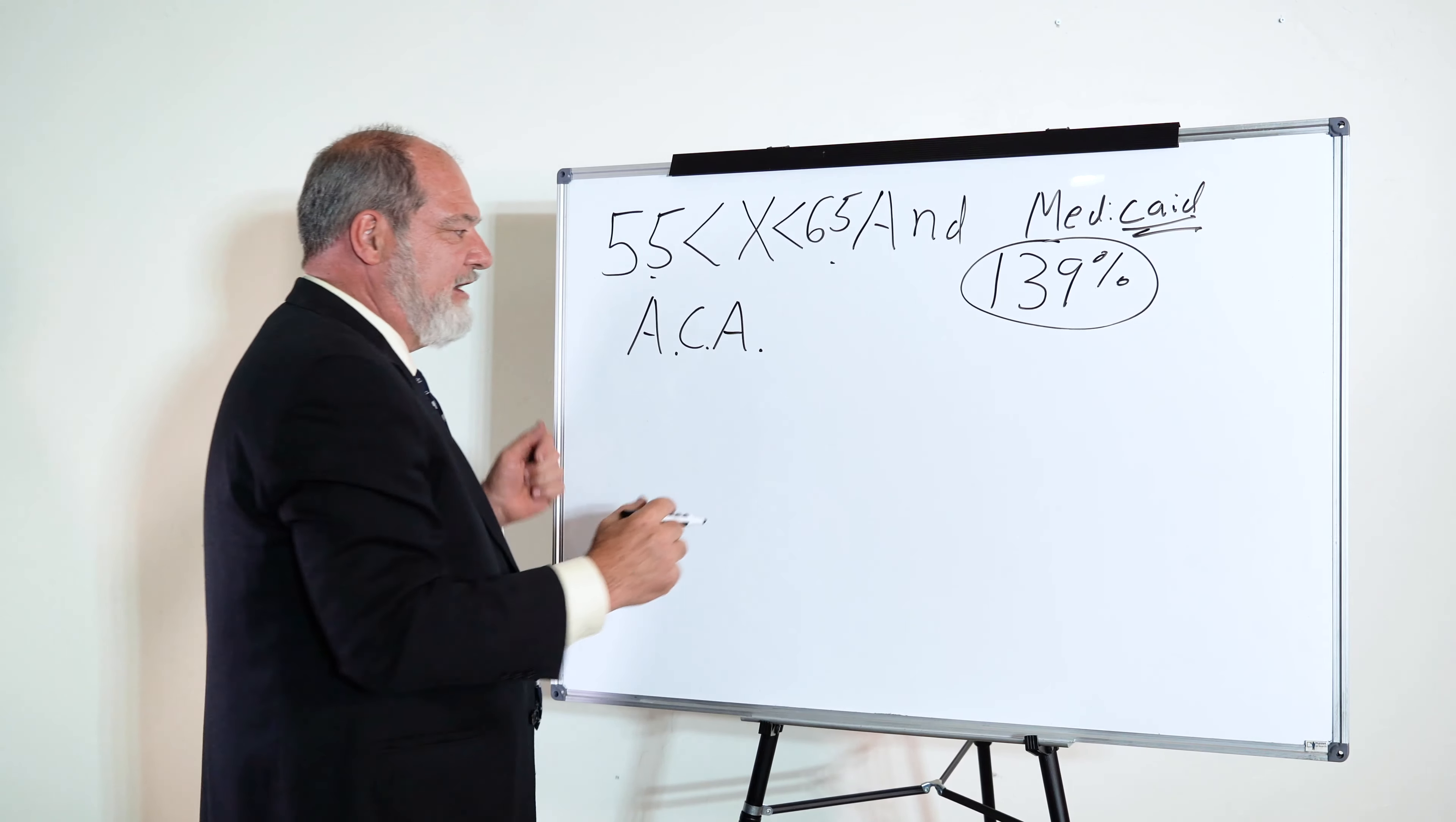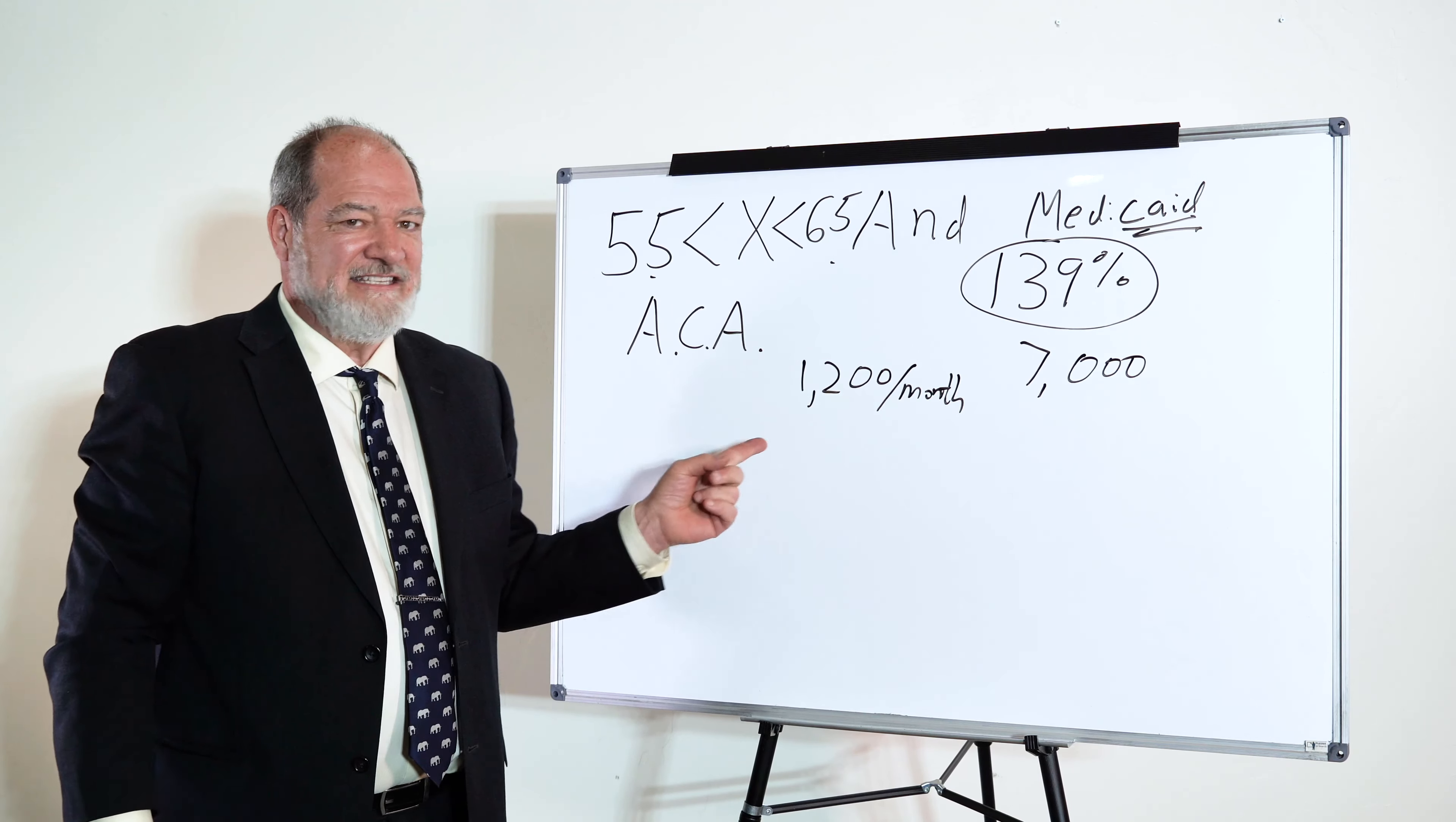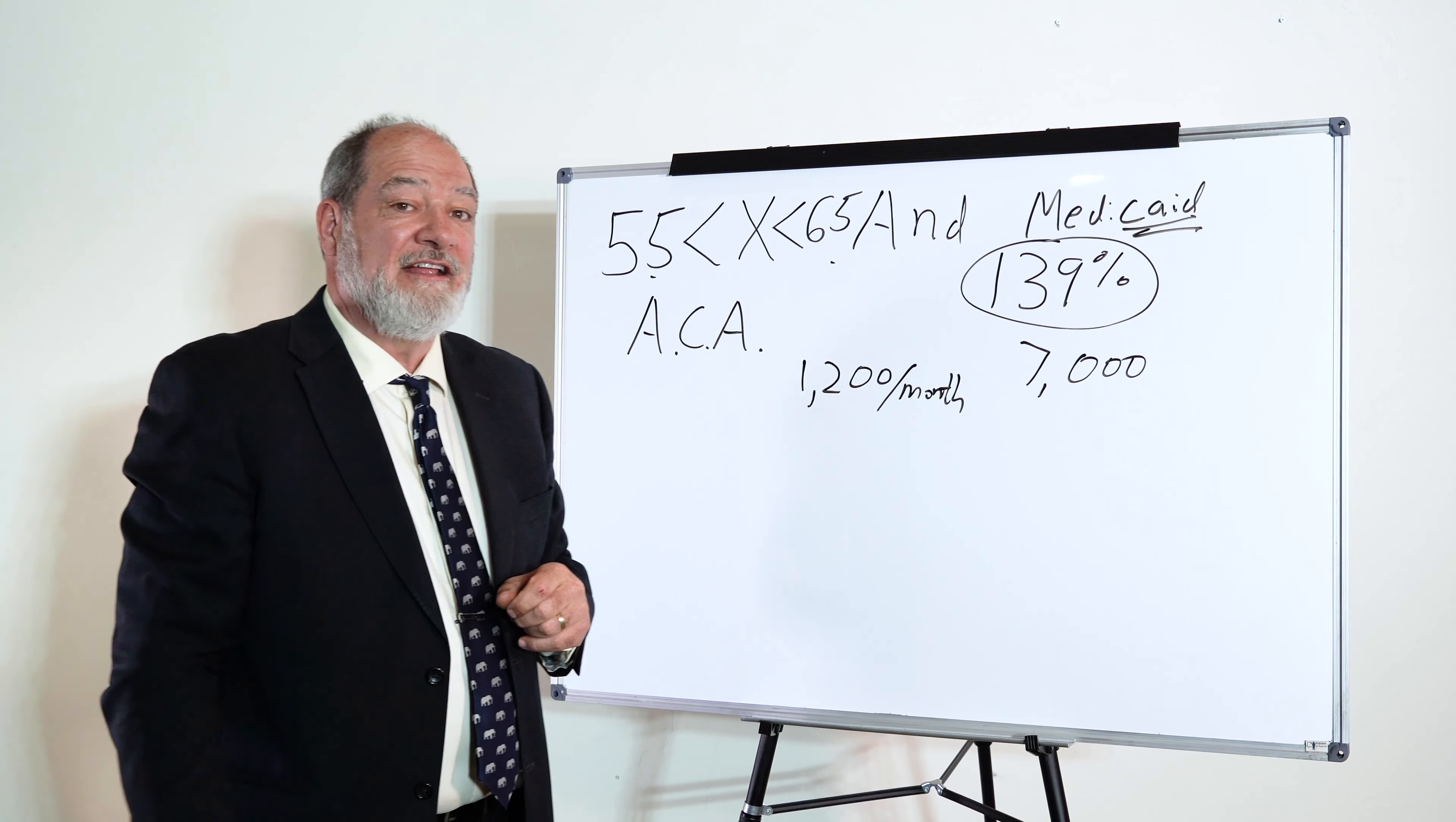My understanding of the bronze plan right now costs $1,200 a month, and it's got a $7,000 deductible. That's what we have around here. That's a horrible plan. That's not saving the average family $4,500 or $2,500, whatever was promised. This is $1,200 a month with a $7,000 deductible.